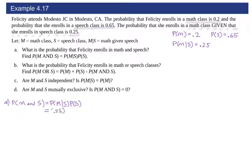The probability of M and S equals the probability of M given S times the probability of S. That's what we're trying to find here, and we're just plugging in the values we have. We get 0.1625. Pretty straightforward — they gave us the formula and we're just plugging those in.